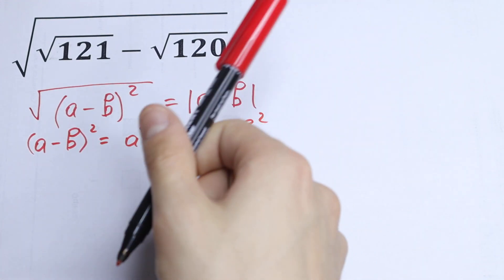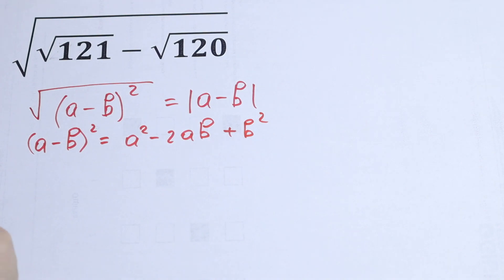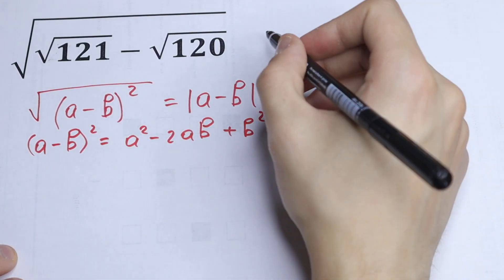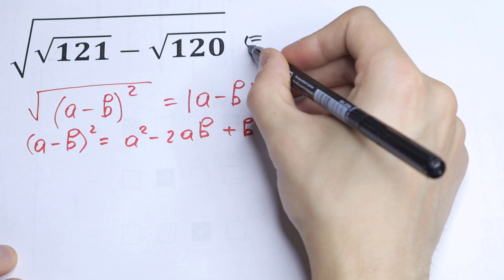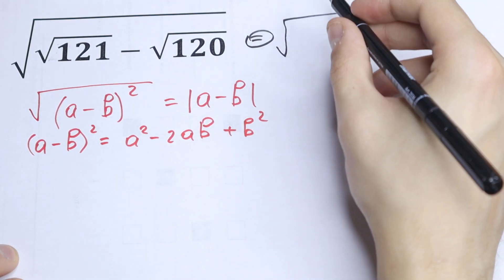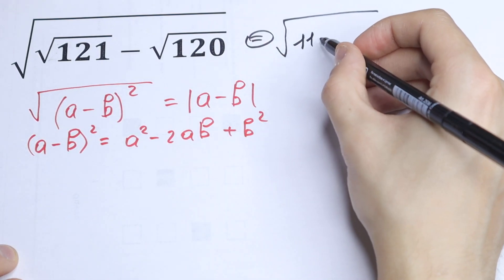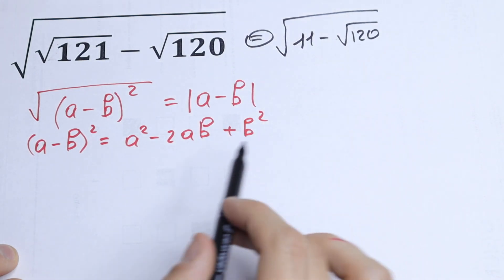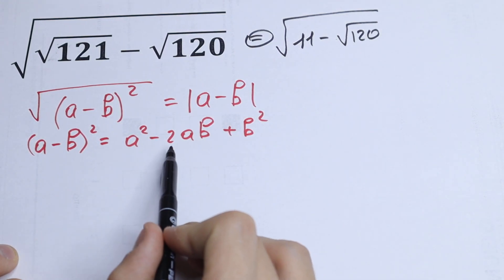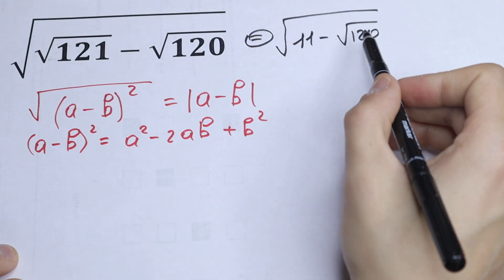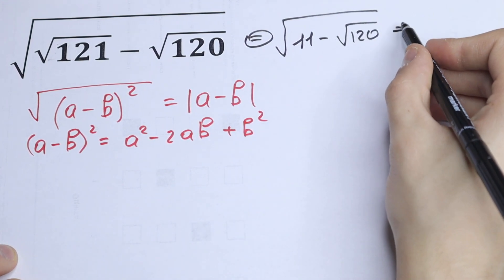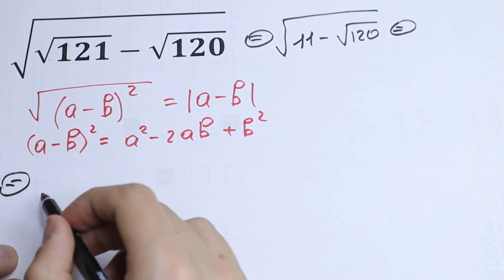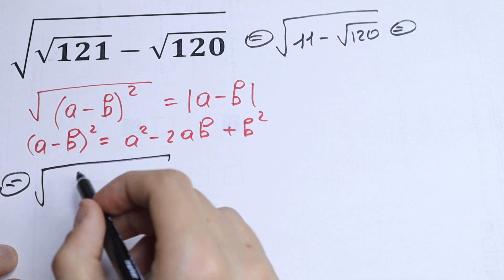So let's try to create that formula right here. First of all, we can calculate the square root of 121, so we will have the square root of 11 minus the square root of 120. We need a 2 right here, but we have the square root of 120. How can we deal with this? Let's try to simplify this square root of 120.